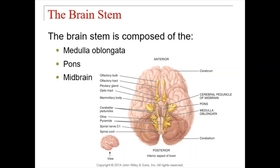On the image, the bottom of the brainstem shows small projections called pyramids — that's the medulla. Moving more superiorly, you see a large oval egg-shaped projection — that's the pons. Continuing up, you see small clustered projections including the mammillary bodies — that's part of the midbrain section.